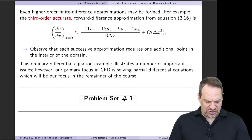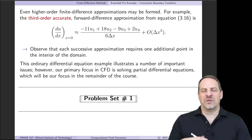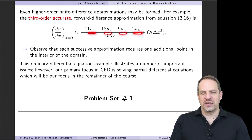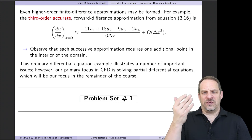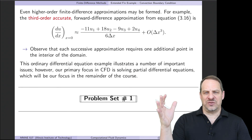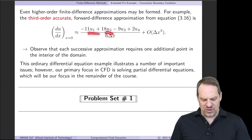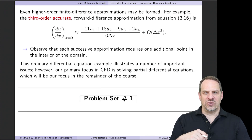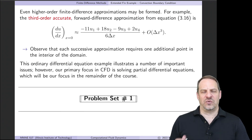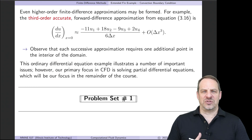A third-order accurate finite difference approximation for the first derivative is (minus 11U1 plus 18U2 minus 9U3 plus 2U4) divided by 6 delta x, requiring one additional point. We can compare first, second, and third order approximations for the heat flux at the base. We only need the first 2, 3, or 4 values of U, but we need the entire solution across the domain to obtain those values. As you increase the order of the approximation, you get more and more accurate estimates of the heat flux.